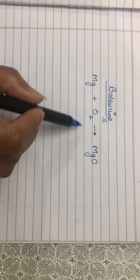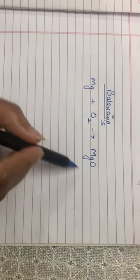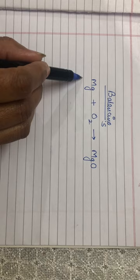Good evening children, we will learn about balancing of chemical equations today. This is a very simple equation that indicates burning of a magnesium ribbon.